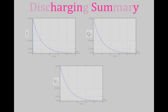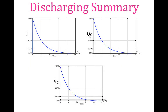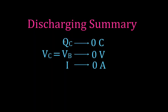For discharging, we have three graphs: the current, the charge on the capacitor, and the voltage across the capacitor. All three are at their maximum, and then all three decay exponentially back to zero. The current goes from its maximum back to zero. The charge is at its maximum and goes back to zero when we discharge. The voltage across the capacitor goes to zero as we discharge because there's no more charge on the capacitor. All three of those curves are identical — the charge, the voltage, and the current all start at their maximums and go back to zero.